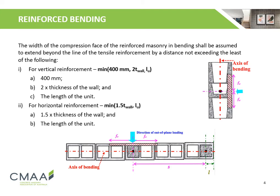The width of the compression zone of the reinforced masonry in bending shall be assumed to extend beyond the line of the tensile reinforcement. The cases for vertical and horizontal reinforcement differ, and shall be taken as the minimum of the following values.